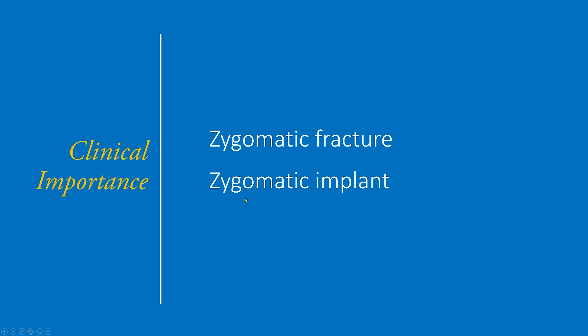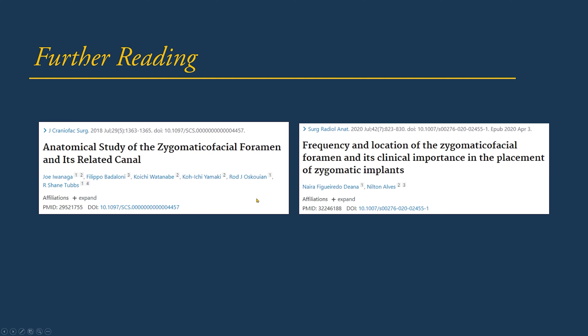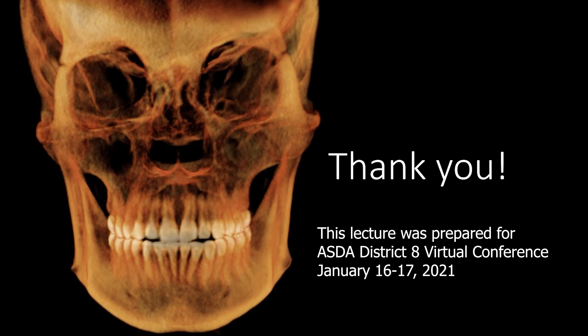The last landmark is the zygomatic facial foramen, which arises from the zygomatic nerve. As it reaches the orbit, it divides into two branches: the zygomaticotemporal branch and the zygomaticofacial branch. The clinical importance is for zygomatic fracture and zygomatic implant placement. I recommend: 'An Anatomical Study of Zygomatic Facial Foramen and Its Related Canal' and 'Frequency and Location of the Zygomatic Facial Foramen and Its Clinical Importance in Zygomatic Implants.' Thank you — I hope you enjoyed learning these landmarks not commonly covered in the dental school curriculum.